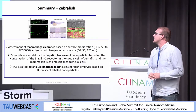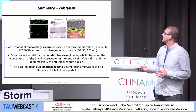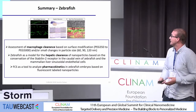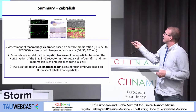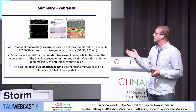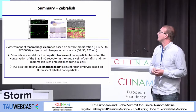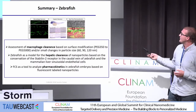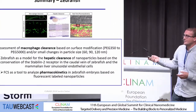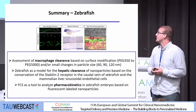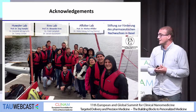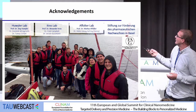In summary, we validated the zebrafish as a model for macrophage clearance regarding pegylated particles, and are applying this for groups synthesizing PEG alternatives. We are able to observe differences in particle size of 60, 90, and 120 nanometers — really small differences. We also validated the zebrafish as a model for hepatic clearance, and using FCS it is possible to perform real-time pharmacokinetic measurements in these transparent animals.